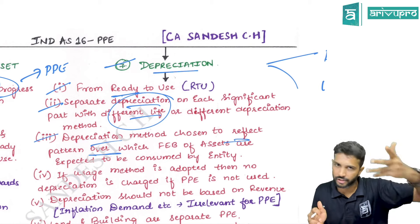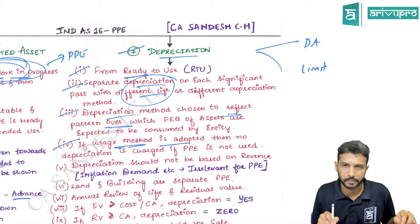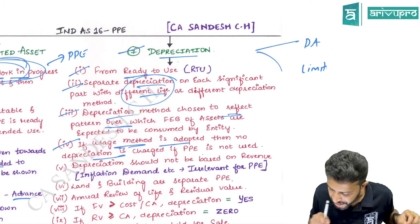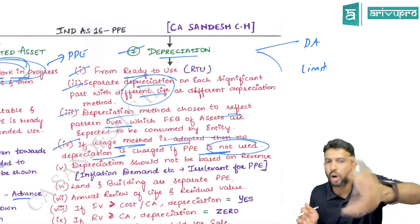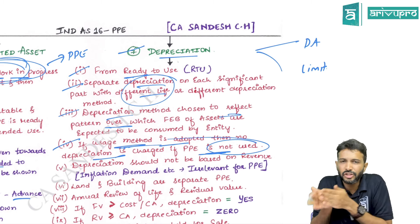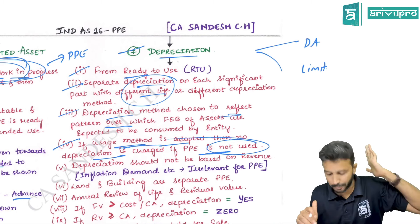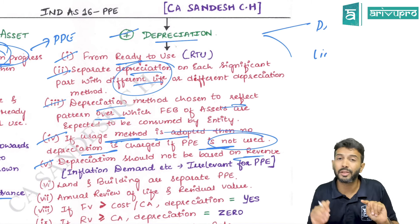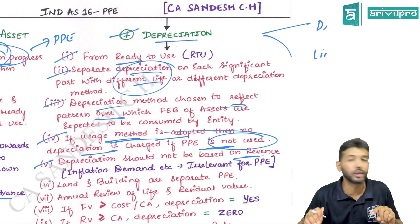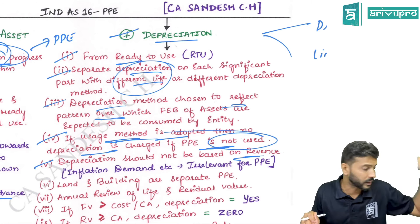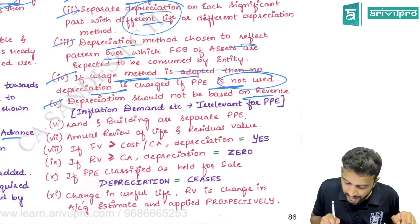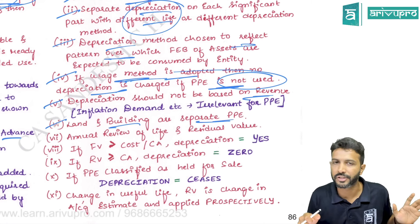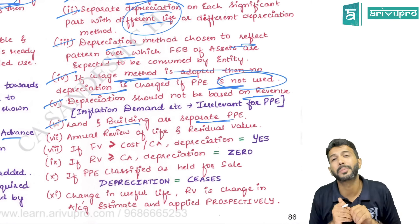The depreciation method chosen should reflect the pattern of economic benefits derived from the asset — for example, if benefits are uniform, use the straight-line method. If the units of production method is adopted, no depreciation is charged in periods when the asset is not used. Depreciation based on revenue is not permitted, as revenue is influenced by many factors beyond PP, such as product price, quality, economic conditions, and competitor actions. Land and building must be separated; no depreciation is charged on land because it has unlimited useful life.